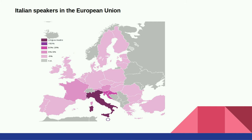In this map we can see the presence of Italian speakers in Europe. In Vatican City, Italian is one of the official languages alongside Latin. In Croatia, Italian is one of the official languages with Croatian in the eastern part of the nation. In San Marino, Italian is the official language. In Slovenia, Italian is one of the official languages alongside Slovenian in many parts of the state. In Switzerland, it is one of the official languages alongside German, French, and Romansh.